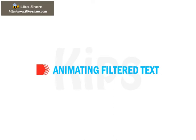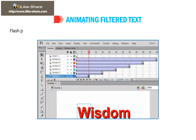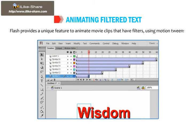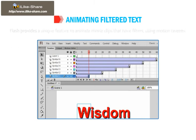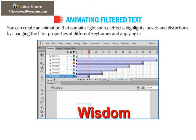Alright students, let us learn how to animate filtered text. Flash provides a unique feature to animate movie clips that have filters using Motion Tweens. You can create an animation that contains light source effects, highlights, bevels and distortions by changing the filter properties at different keyframes and applying a Motion Tween.